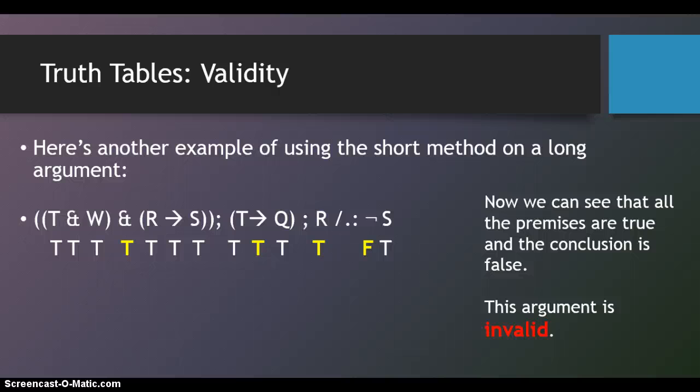Now if there's any argument where you can't do that, where once you've stipulated that the conclusion is false, and you can't make all of the premises true, that argument is not invalid and that's not valid.